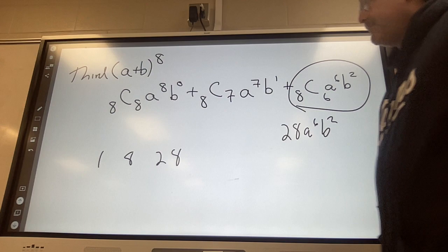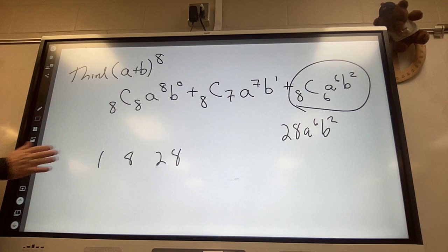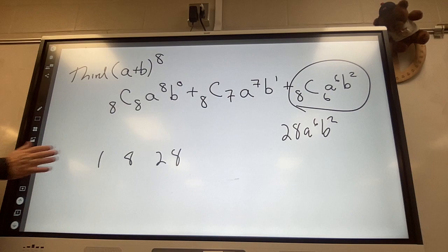So you could just go eight combination six is 28, A to the sixth, B to the second. You could do that. Or you could do Pascal's triangle, one, eight, 28, which we were told. You could do it that way. Now, do it either way.